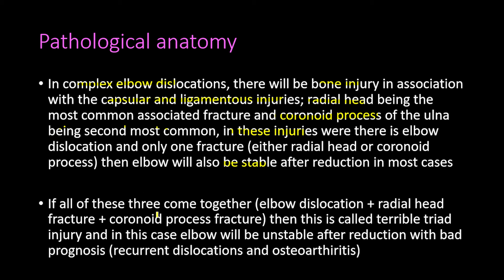When all three occur together — elbow dislocation with radial head fracture and coronoid process fracture — this is called the terrible triad injury. In this case the elbow will be unstable after reduction, with bad prognosis including recurrent dislocations and osteoarthritis.